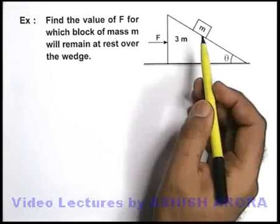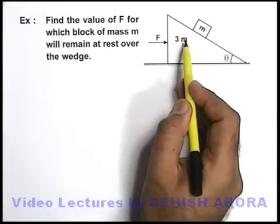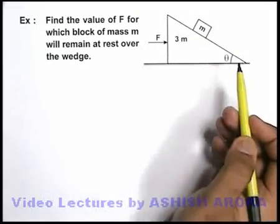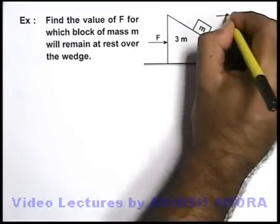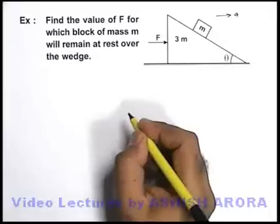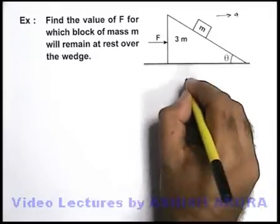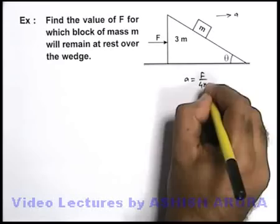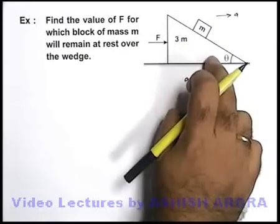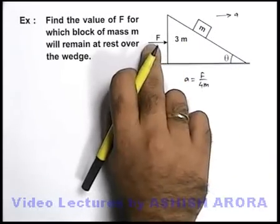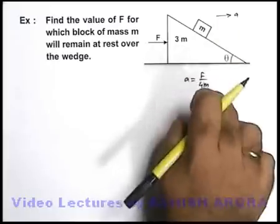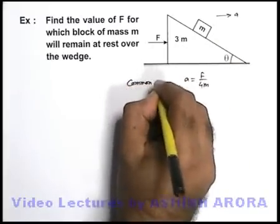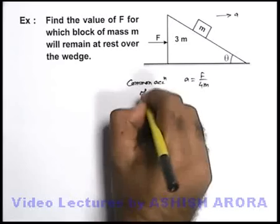We can say that if this small m will be at rest on 3m, the whole system will move together as a single body. If the whole system is moving with an acceleration ay, we can write the common acceleration ay as F upon 4m. Because if we treat the whole body of mass 4m, then the applied force F will produce an acceleration F by 4m. This ay is the common acceleration of the system.